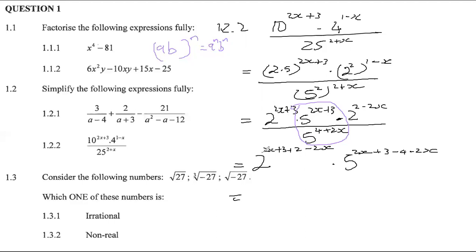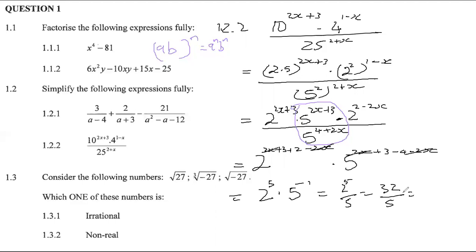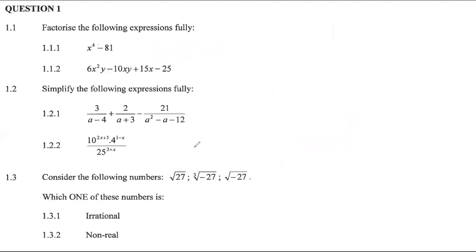So the 2x and minus 2x cancel to zero, and 3 minus 4 gives minus 1, leaving 2 to the exponent 5 over 5 to the exponent 1... wait, the 2x and minus 2x on the 5s also cancel, giving 2 to the power 5 over 5. That is 32 over 5. We don't usually leave improper fractions, so 5 goes into 32 six times with a remainder of 2, giving 6 and 2/5.